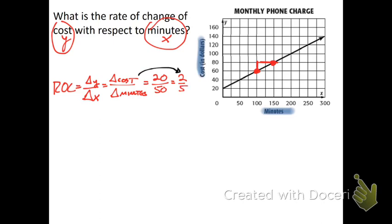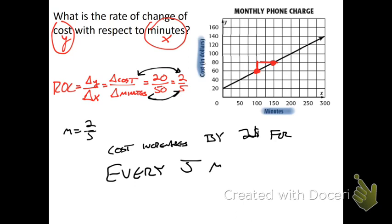But that's important because that is our slope. And we can now interpret it. So if I want to say first, the slope is two-fifths, that means that the cost is going to increase by two dollars for every five minutes. So the cost increases by two dollars for every five minutes. All right, I think I've got one more example and then we're done.